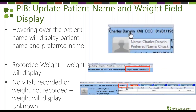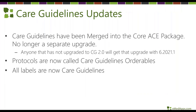You can also hover over the patient name in the patient information bar and the preferred name will display — for example, 'Charles Darwin' showing as 'Chuck.' Additionally, the patient's weight will now display in the patient information bar. If weight was populated in vitals it shows the value; if it wasn't captured for that visit it will display as 'unknown.'